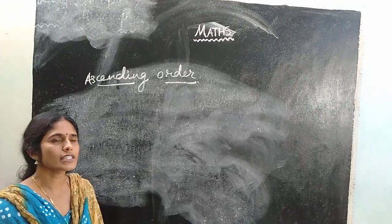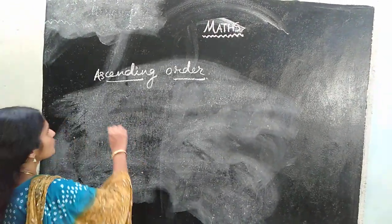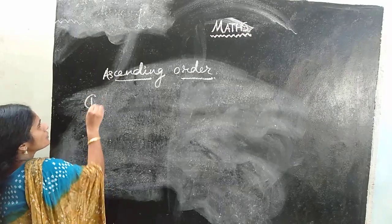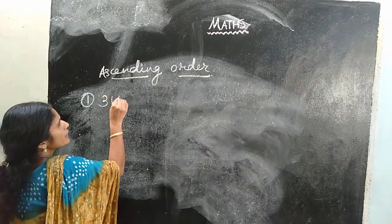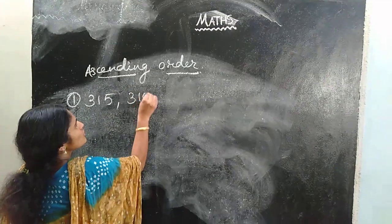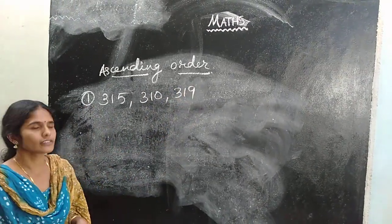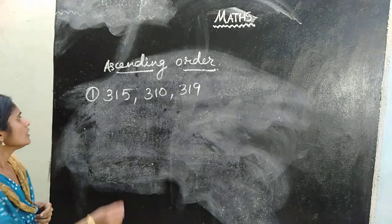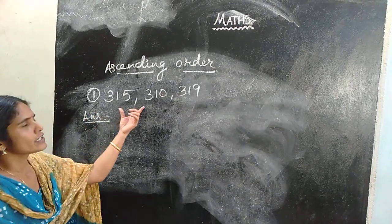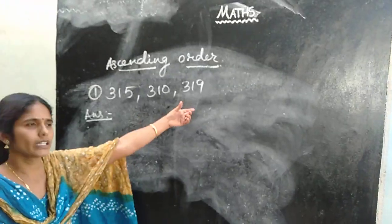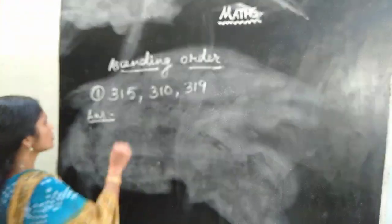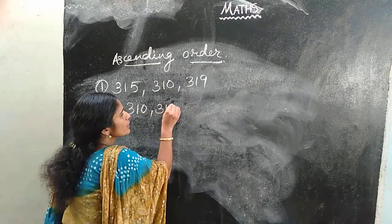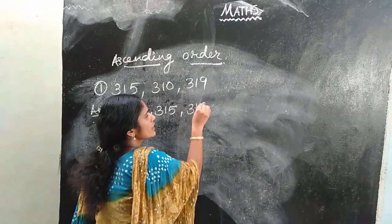The next is ascending order. Ascending order means arrange the given numbers from smaller to bigger. Here example: 315, 310 and 319. How we can arrange these numbers in ascending order? The smaller number is 310, so first write 310. The next number is 315 and the last one is 319.